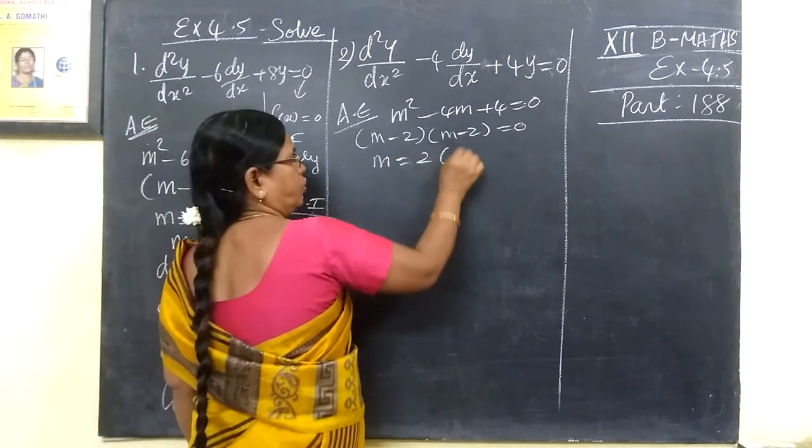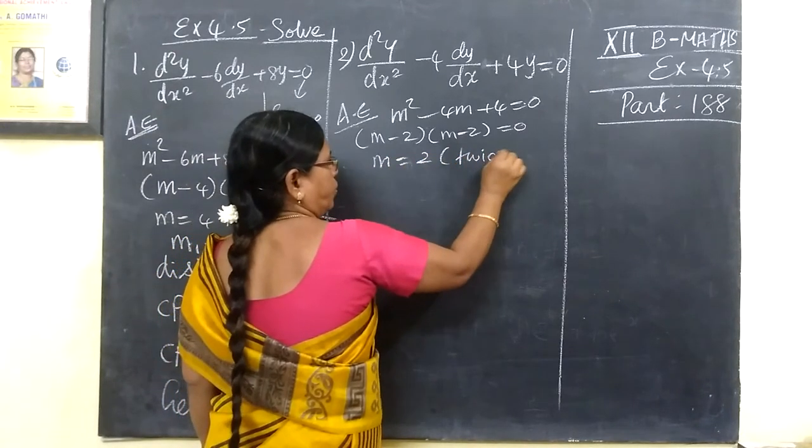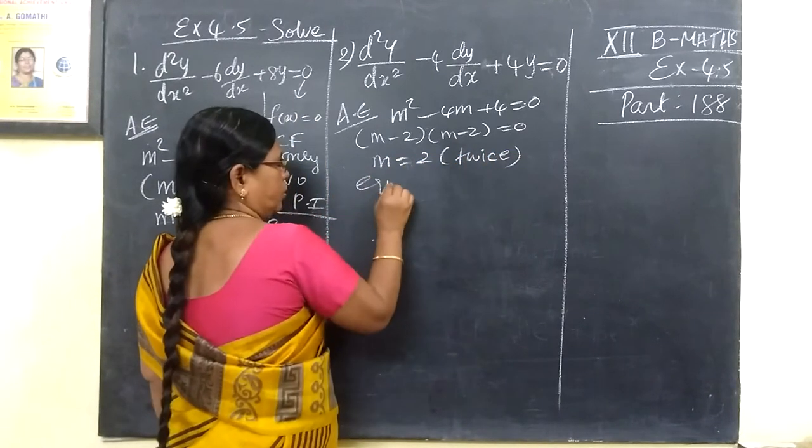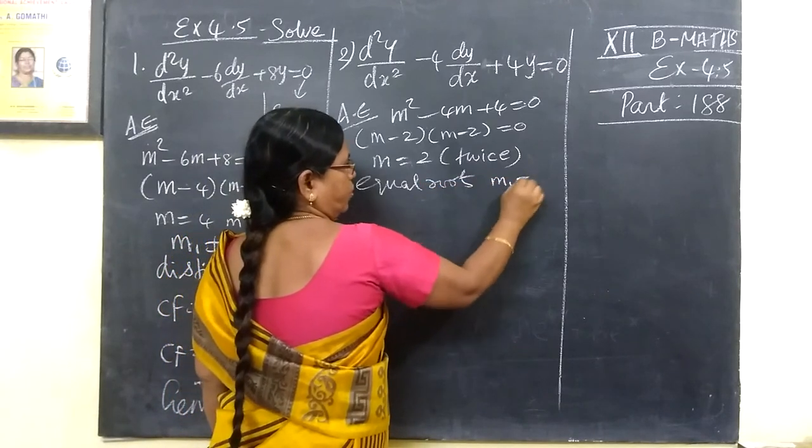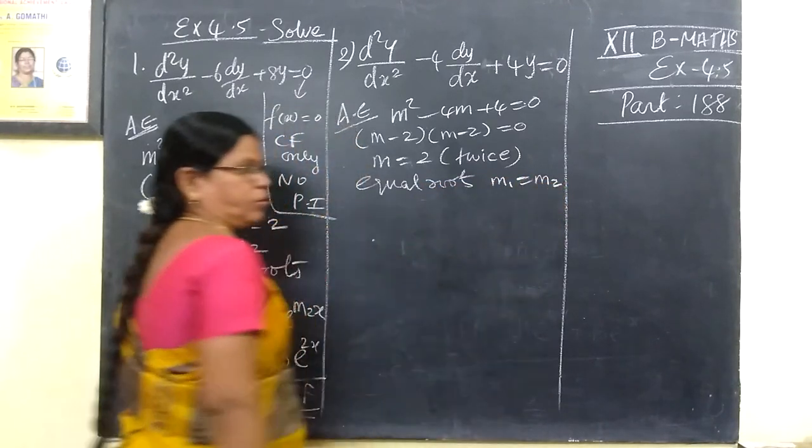For equal roots, when m1 equal to m2, the solution form changes.